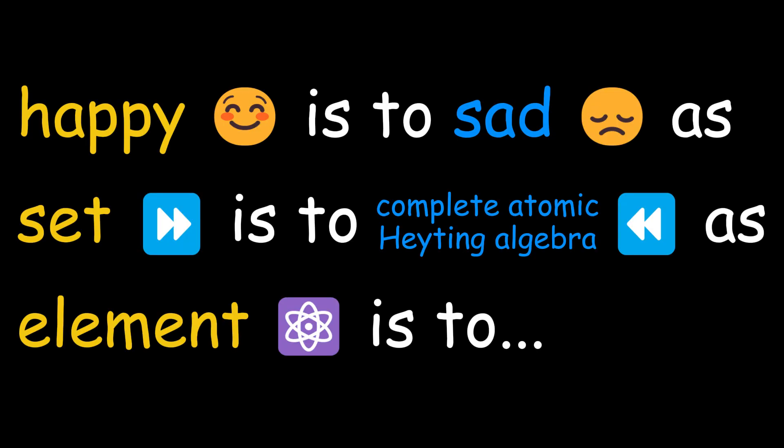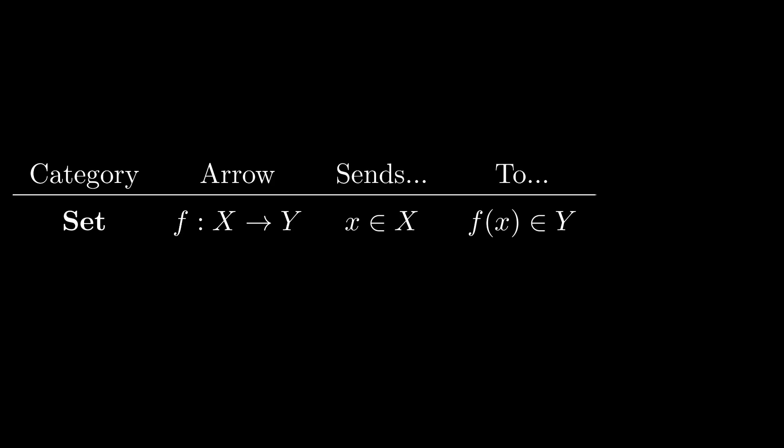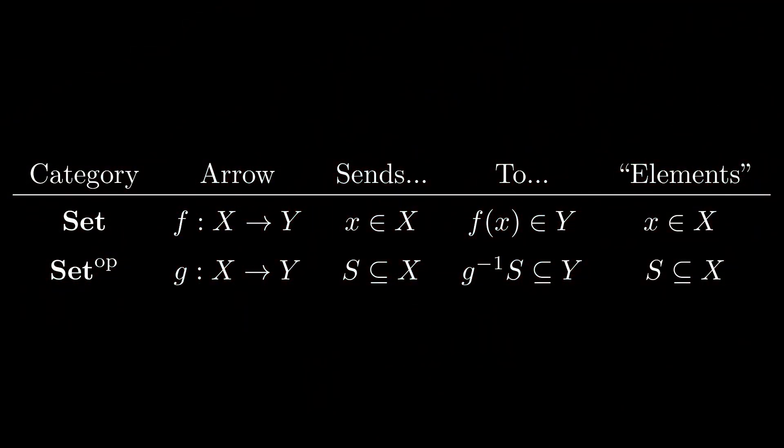Interestingly, using union and intersection of subsets, the category of power sets actually defines a category of algebras. This will be especially handy later, because it means we can use limits in set to calculate limits in the opposite category. But I'm getting ahead of myself. Now that we know what the opposite of sets are, we can use this to determine what coelements are. In the ordinary category of sets, an arrow f from x to y is a function that sends an element of x to an element of y.